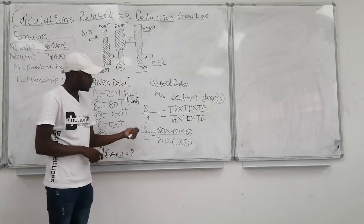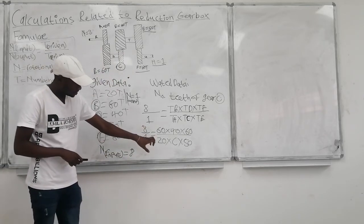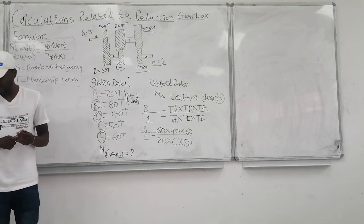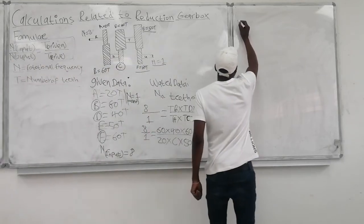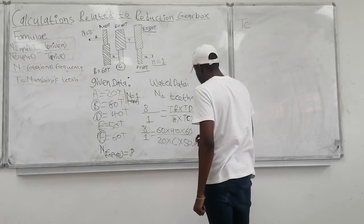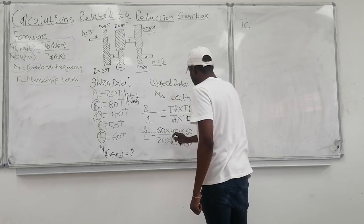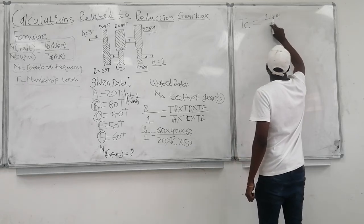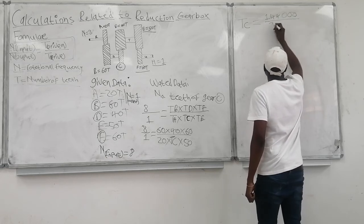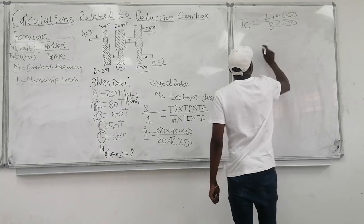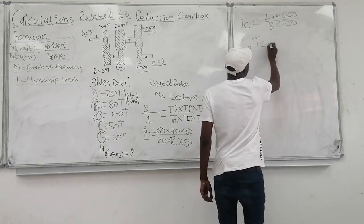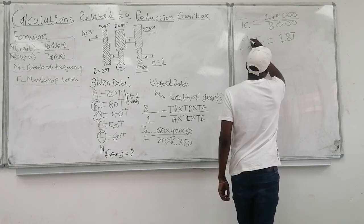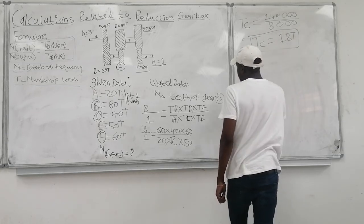Now we calculate the unknown T_C. T_C is going to be equal to 144,000 divided by 8,000. Therefore T_C equals 18 — gear C has 18 teeth. This is the number of teeth of gear C which we were calculating.